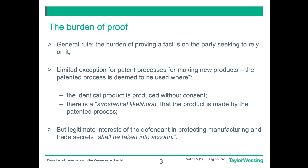Article 55 has in the past had its main application in the enforcement of pharmaceutical process patents in those countries where, at the time the patent was granted, product patents were not available under national law for new pharmaceuticals. The UPC agreement simply adopts the wording of Article 34 of the 1994 TRIPS international agreement, including its optional second limb, and those are set out on the slide before you.